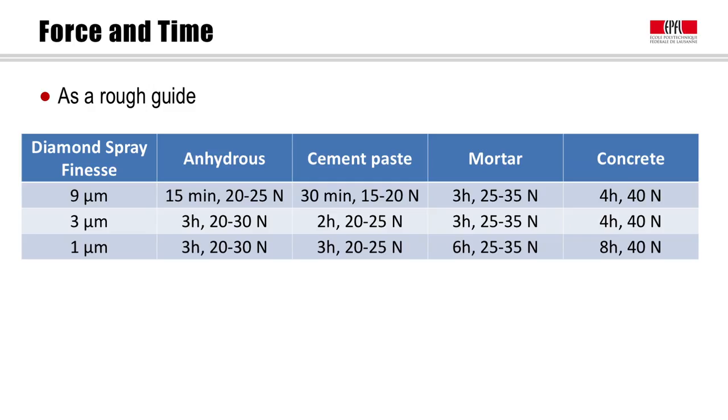Then, the polishing is carried out using a spray containing particles of diamonds and a lubricant, petroleum. There are at least three steps corresponding to a diamond particle size. We always start with the biggest one, 9 microns, and then the finest one, 1 micron.